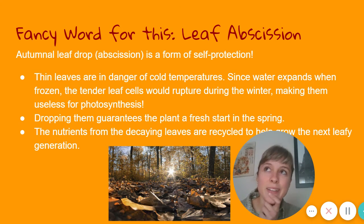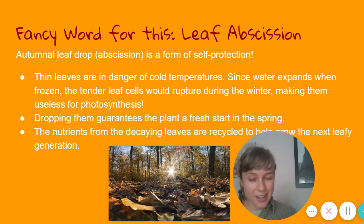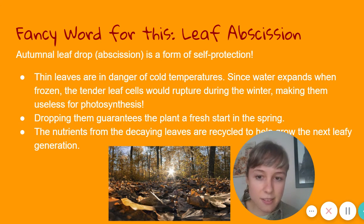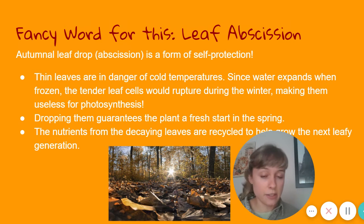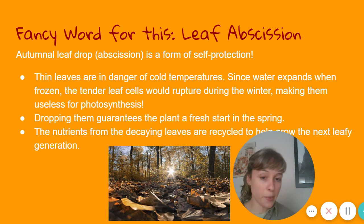Leaves are like big solar panels that soak up the sun so they can make sugar. If a tree can't use its leaves to soak up the sun and make sugar, it can't live. So even though it may not seem obvious, dropping the leaves is actually protecting the tree — it guarantees the plant will start fresh in the spring with all new, healthy leaves capable of photosynthesis.